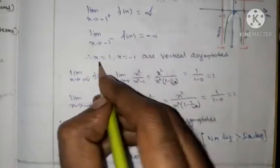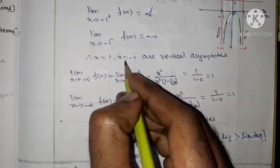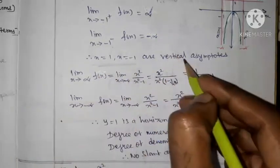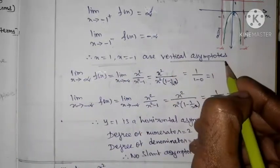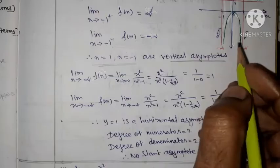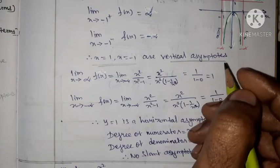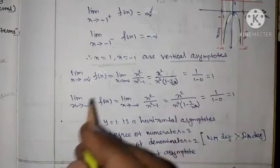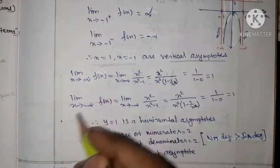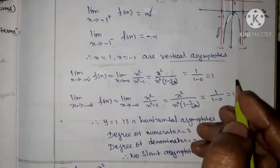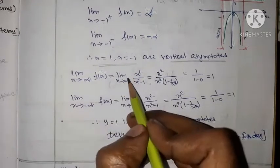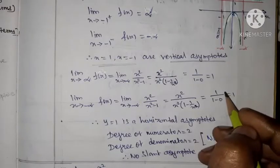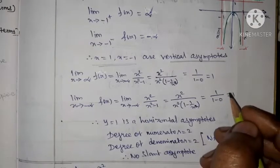Therefore, x = 1 and x = -1 are the vertical asymptotes. Both values give infinite limits, confirming these as vertical asymptotes. So x = 1 and x = -1 are the vertical asymptotes.